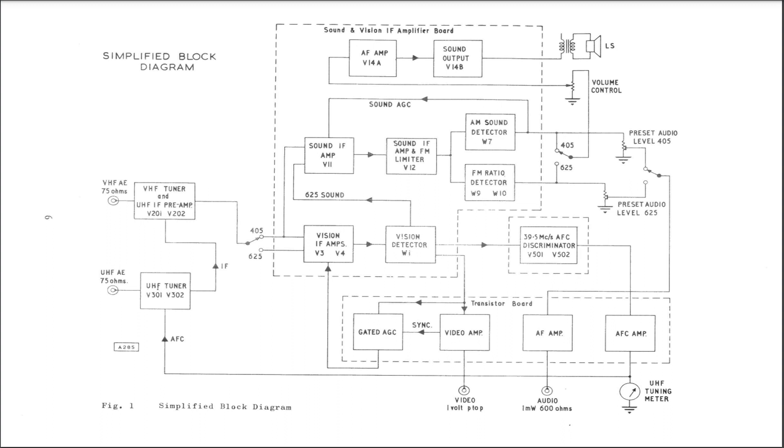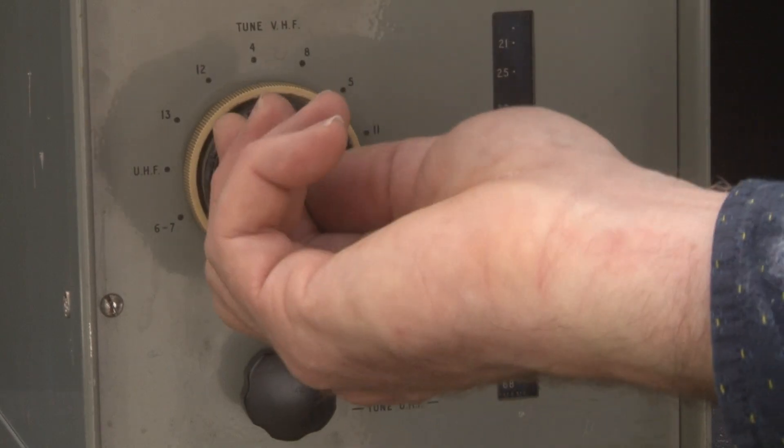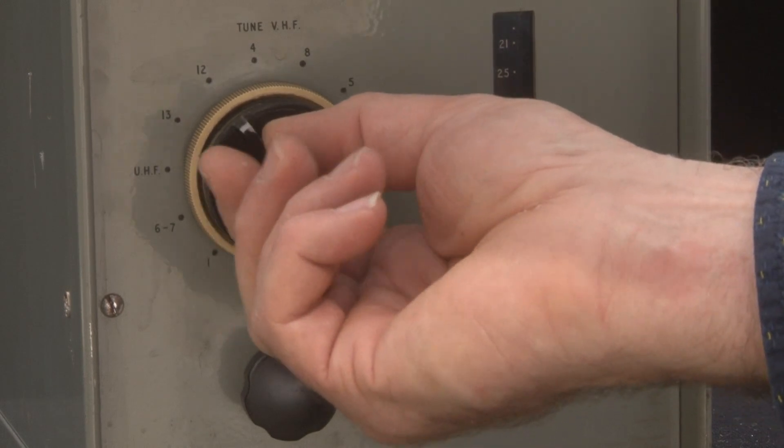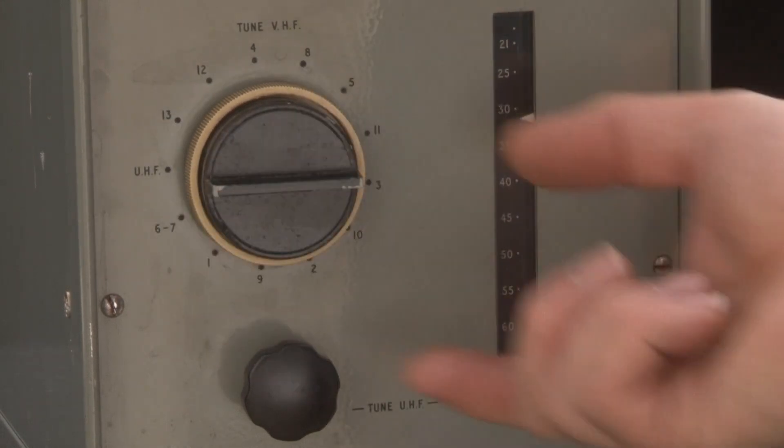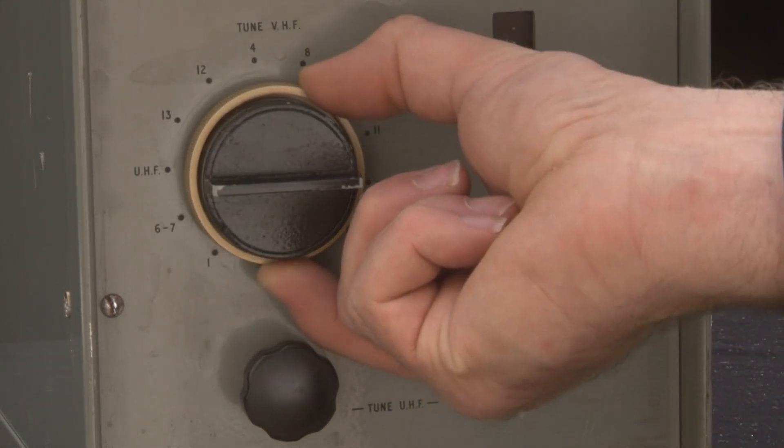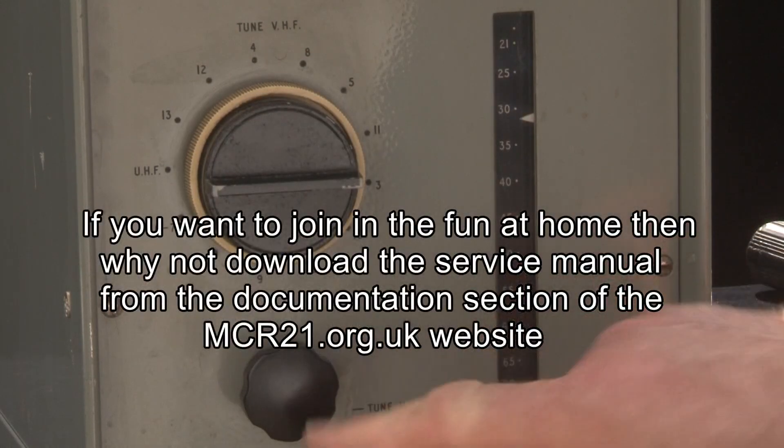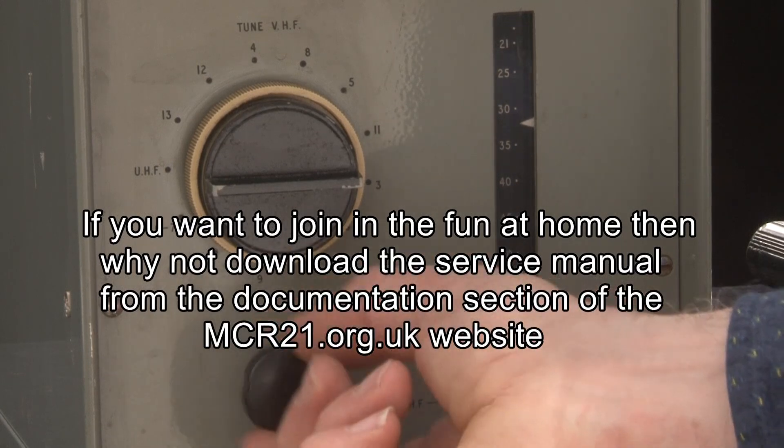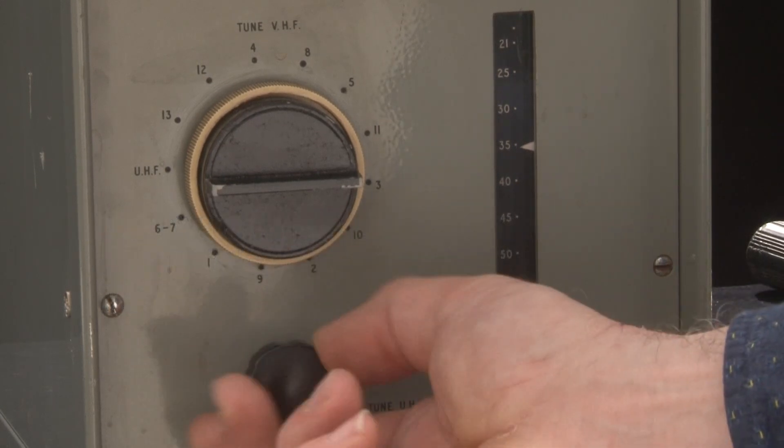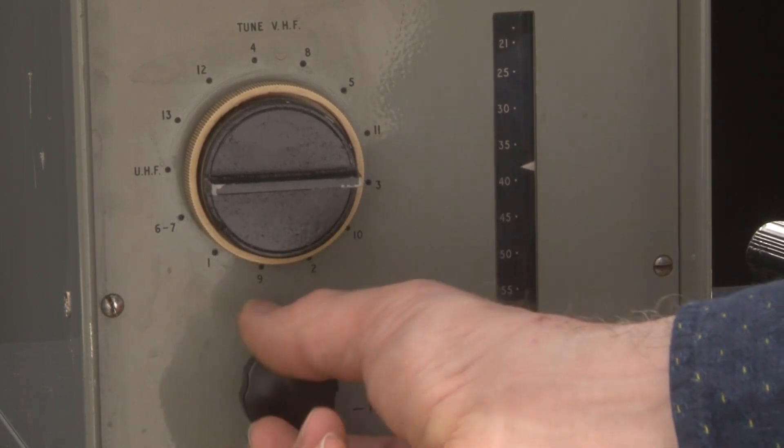There are effectively two off-air receivers in the same box. The VHF channels are set by fixed internal coils. But there is a fine tuning arrangement here. But for UHF, we have full control over the entire channel set from 21 to 68.